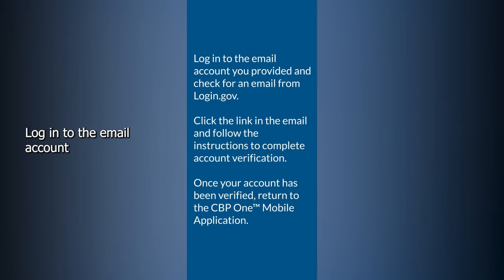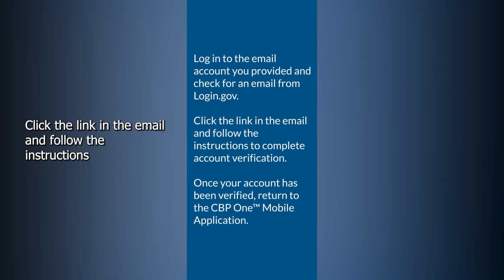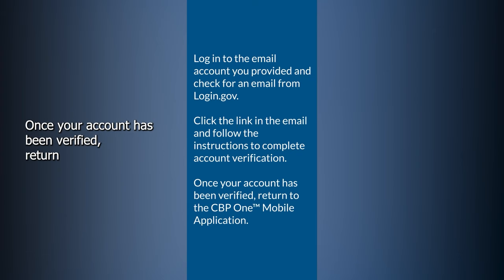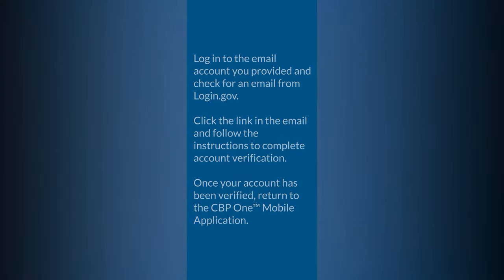Login to the email account you provided and check for an email from login.gov. Click the link in the email and follow the instructions to complete account verification. Once your account has been verified, return to the CBP One mobile application.